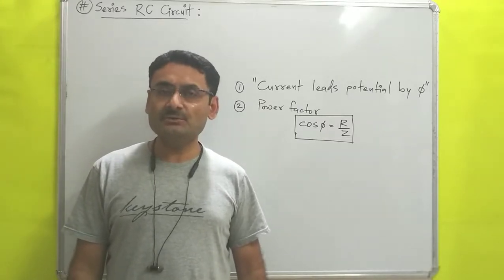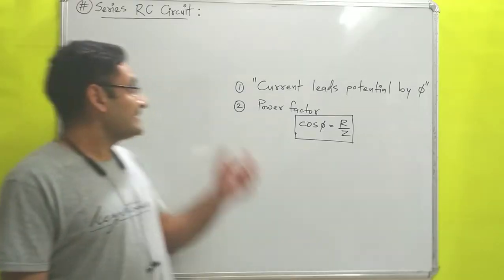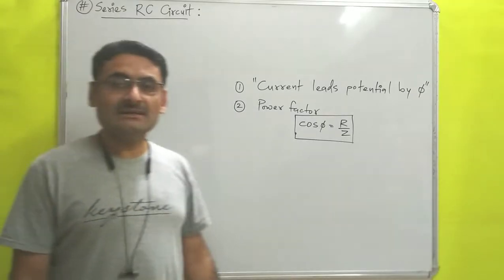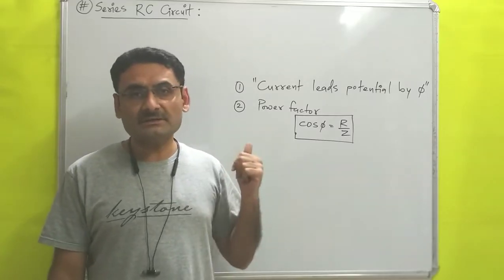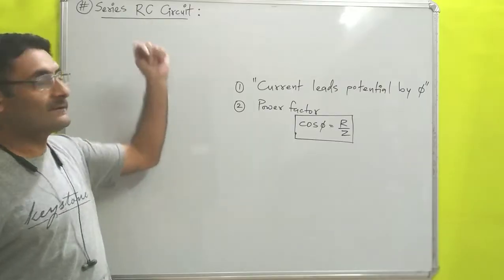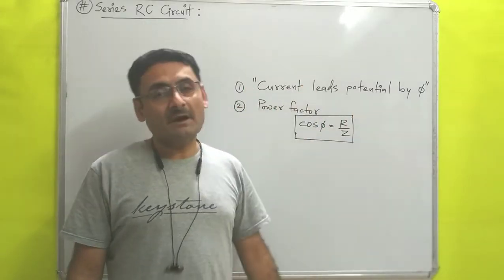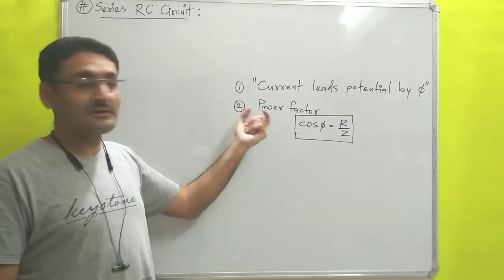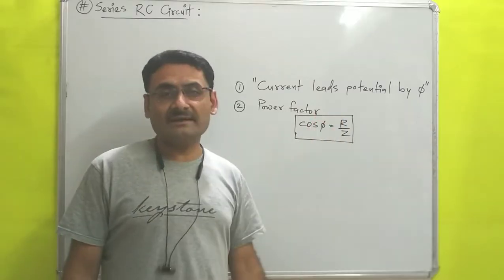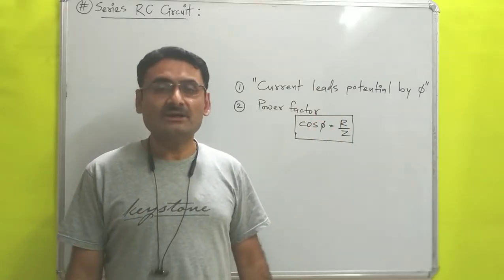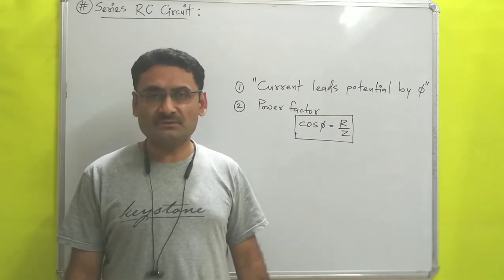Today we will study unit number 2 - AC circuits - in which we will understand the series RC circuit. We are going to cover two main points: why in the case of a series RC circuit current leads the potential by phi, and how the value of power factor comes to be cos φ = R/Z. So without wasting much time, let us start this video.